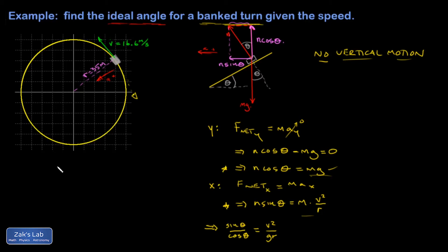I guess I'll move over here where there's plenty of space. Tangent theta is equal to v squared over gr, which means theta is the angle whose tangent is v squared over gr.